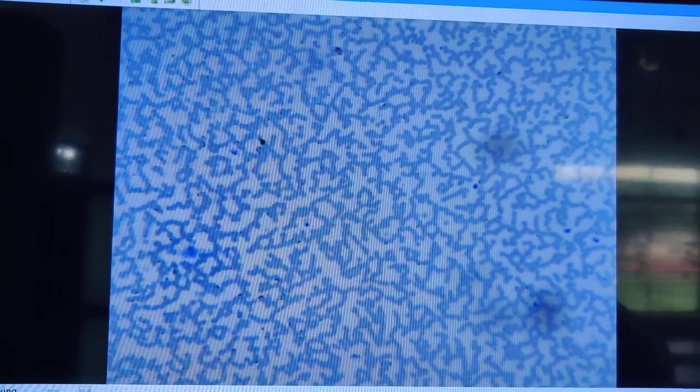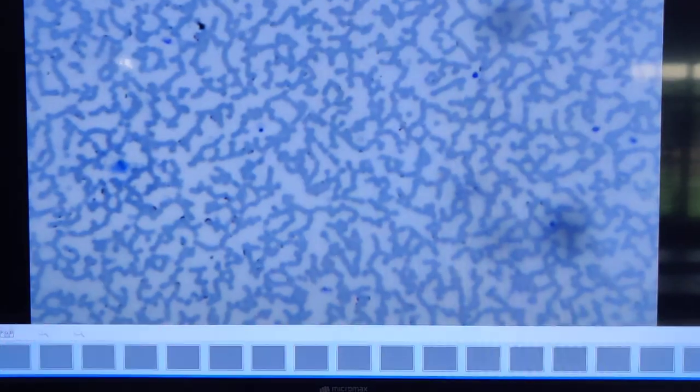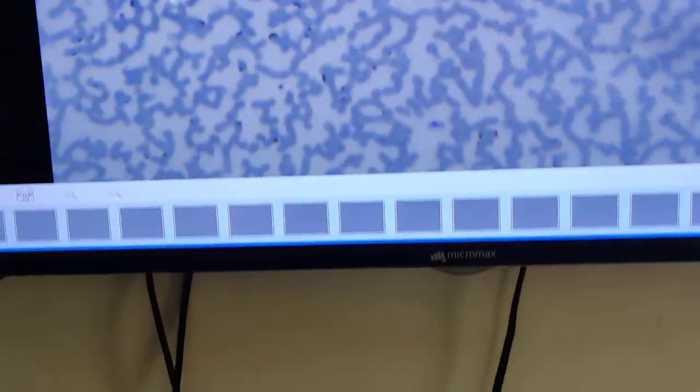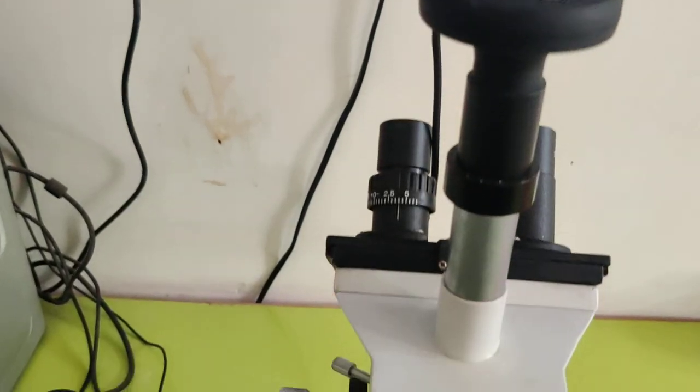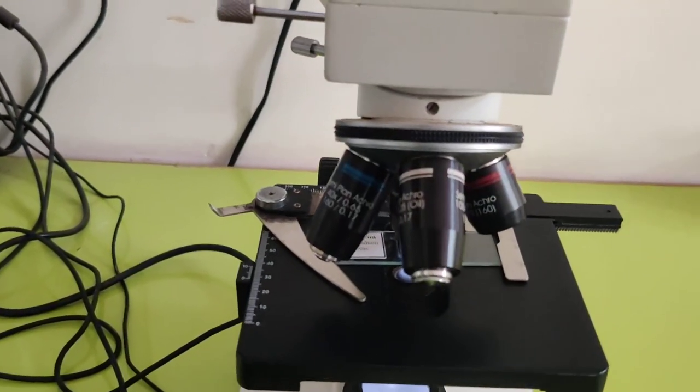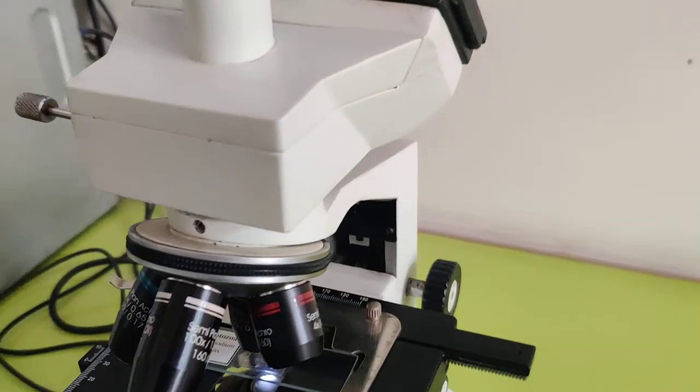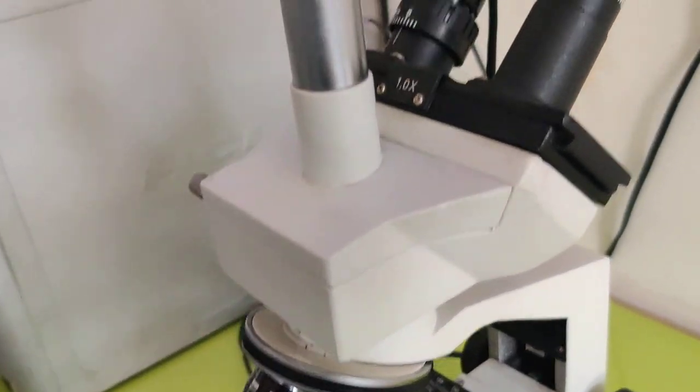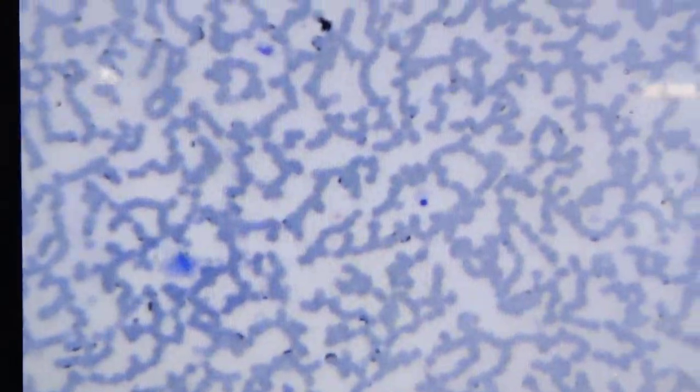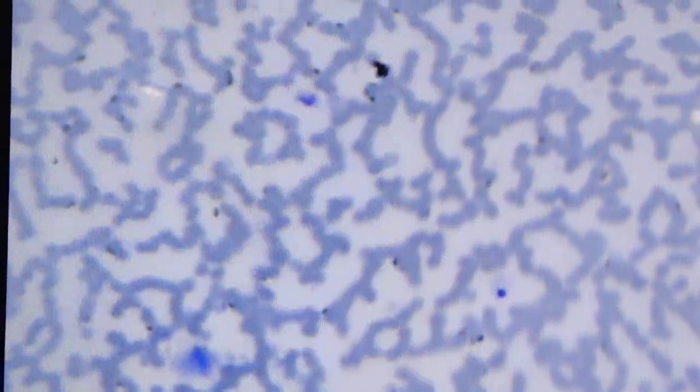To see the structure of different types of WBC, you have to take the high power of microscope. This is the microscope by which I am showing you this slide.